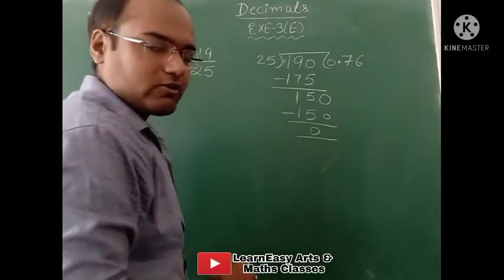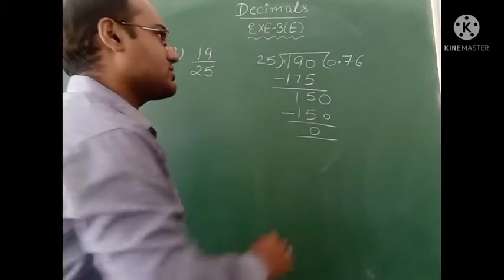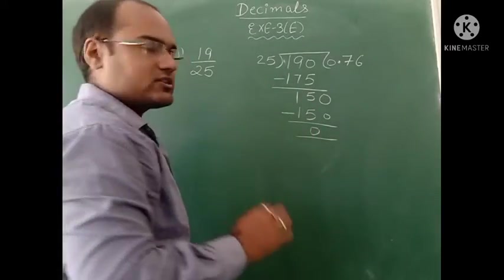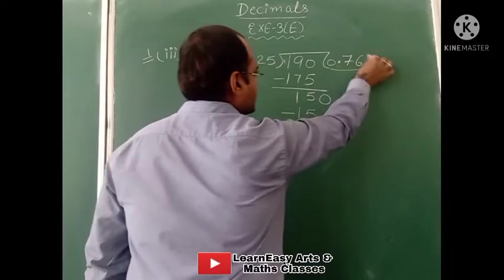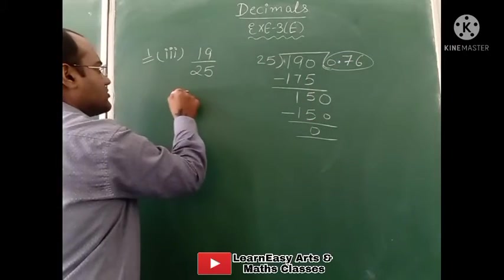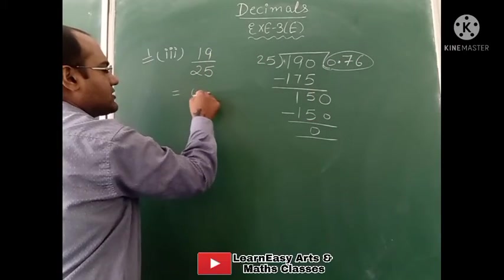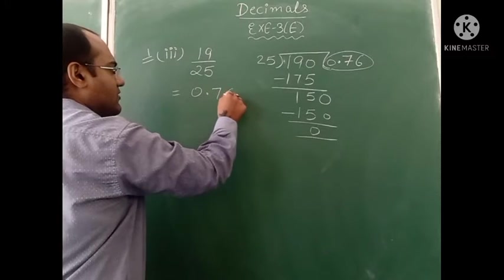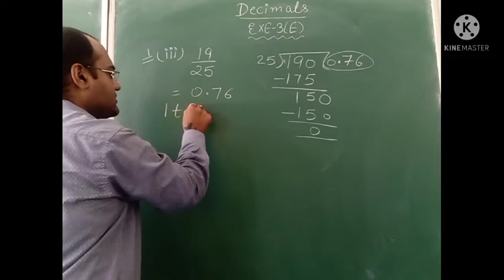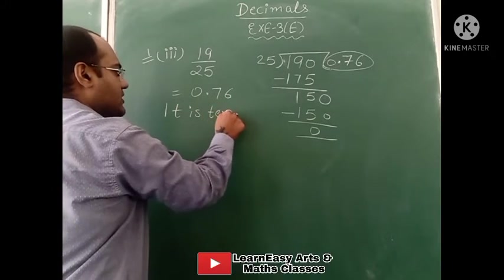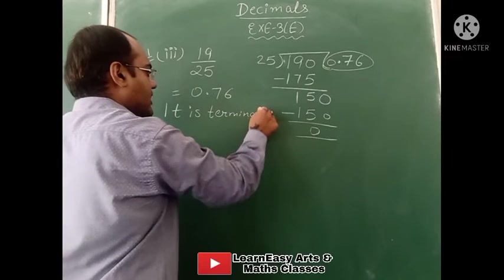Again in this part also we are getting remainder 0. That means division work is over. Such decimal numbers are known as terminating decimal. The answer of this is 0.76, and after that we will write: it is a terminating decimal.